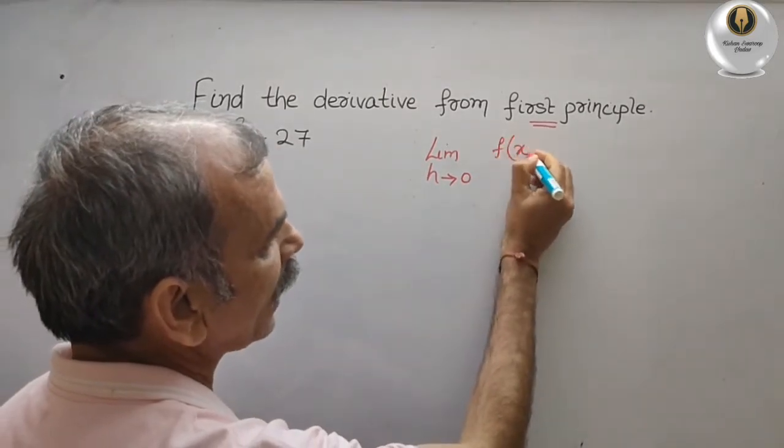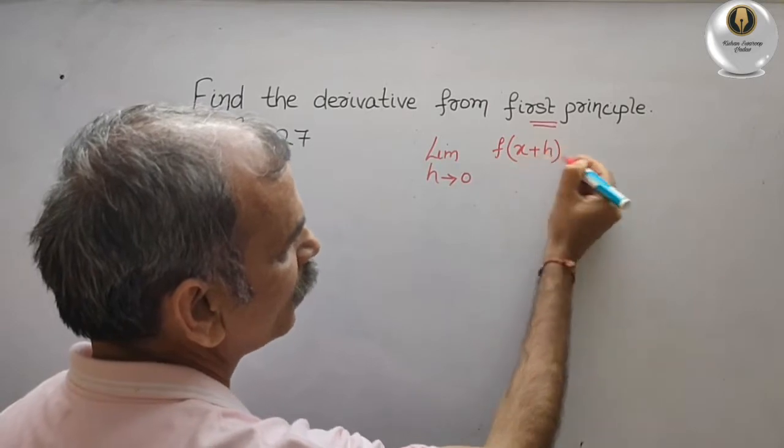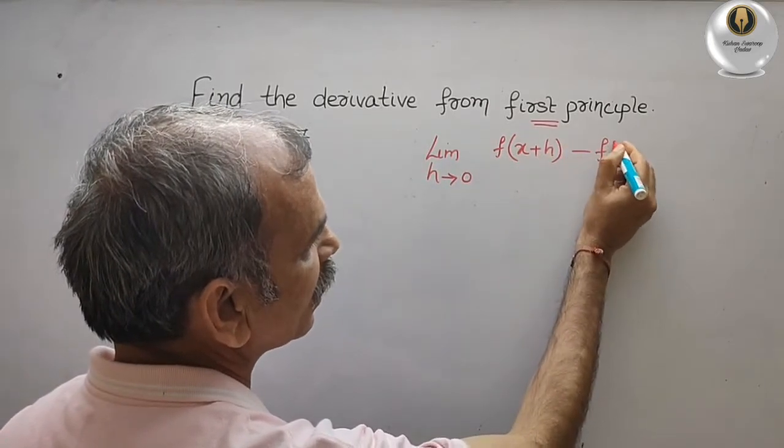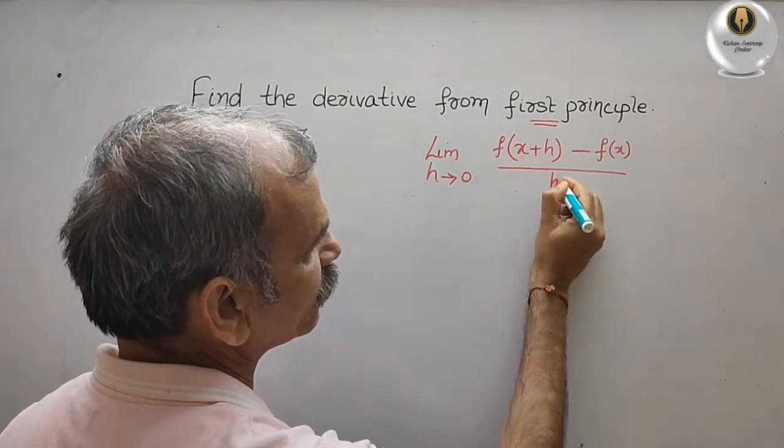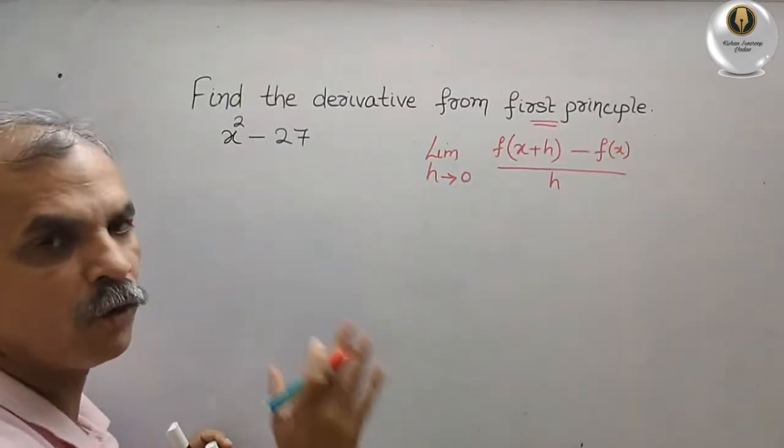And here we will write f of x plus h minus f of x, divided by h. So this is the formula what we have to put.